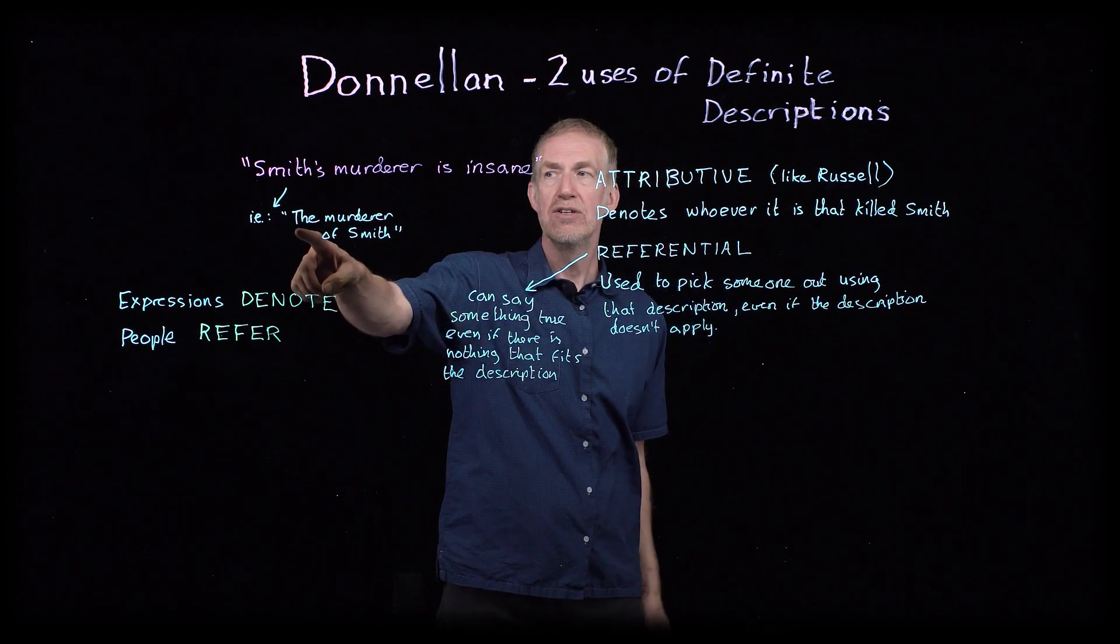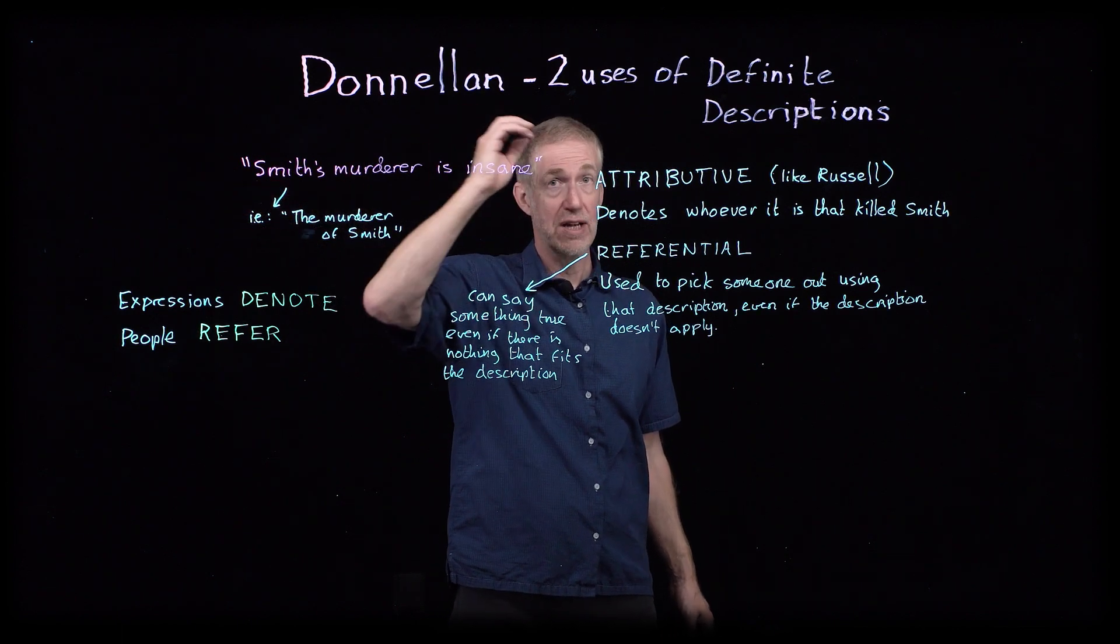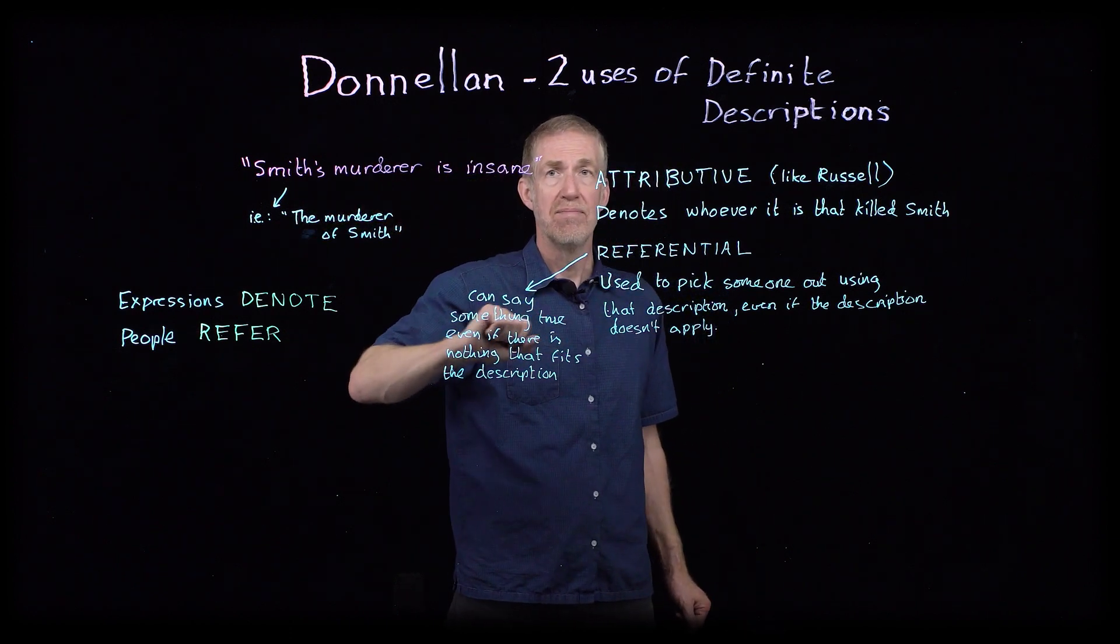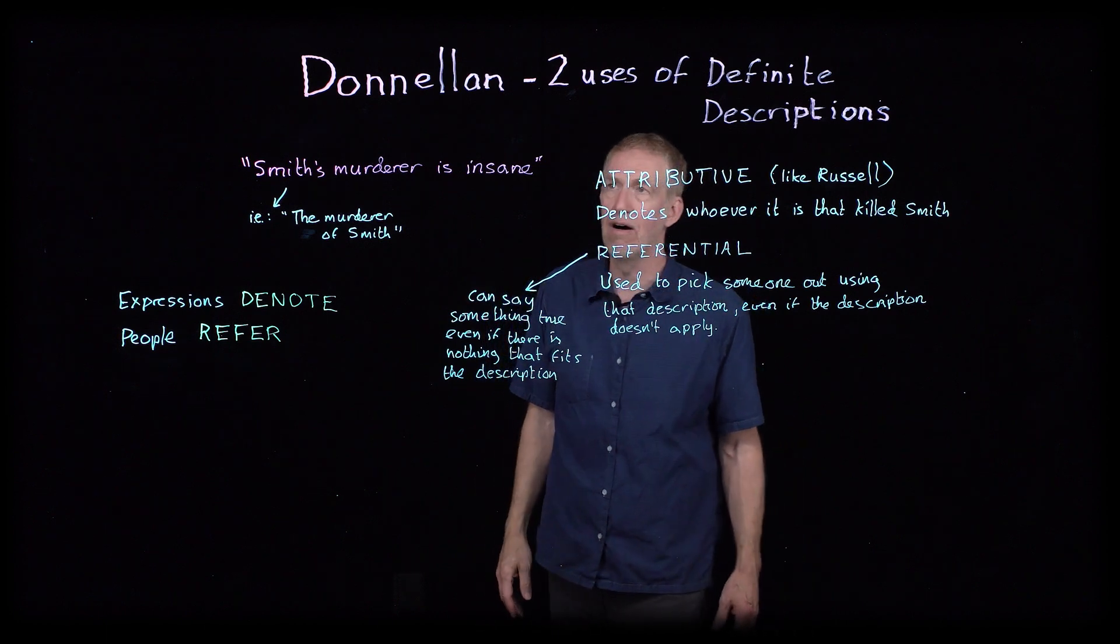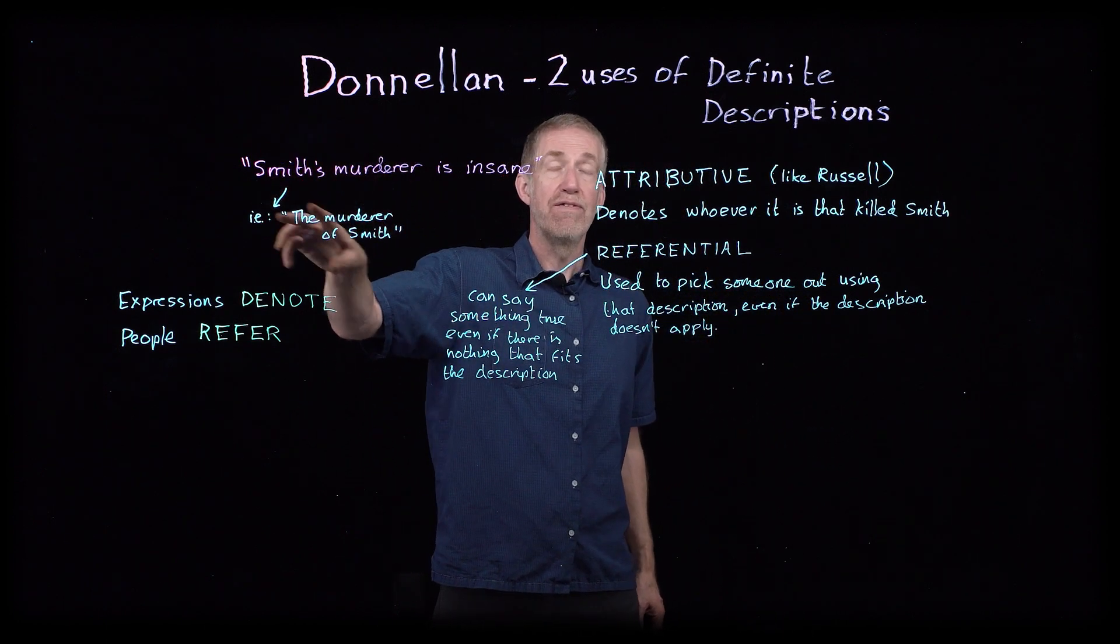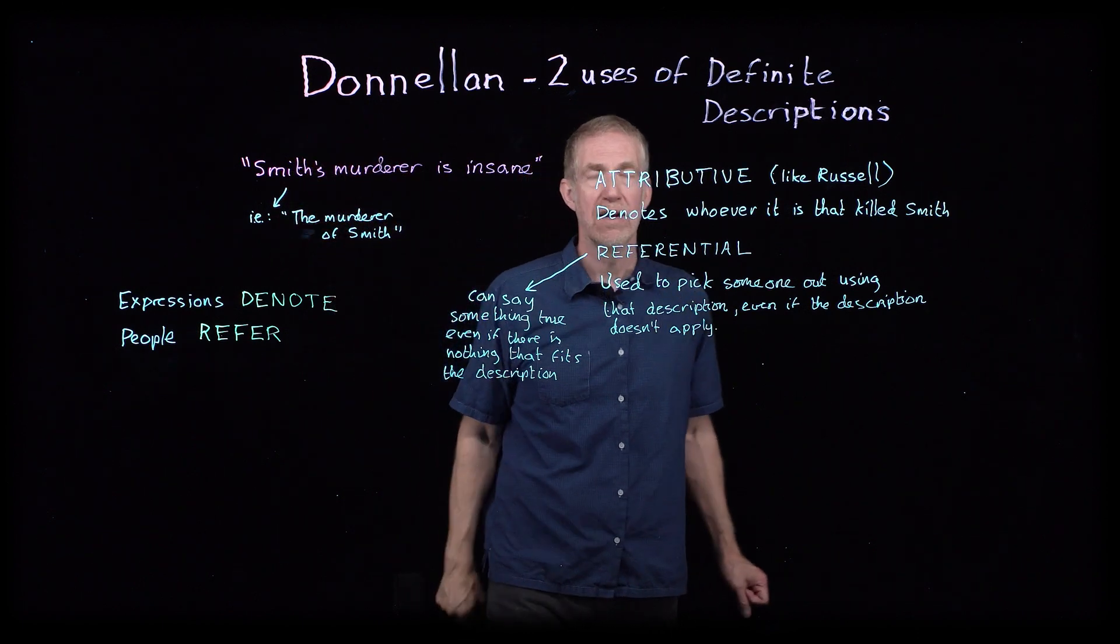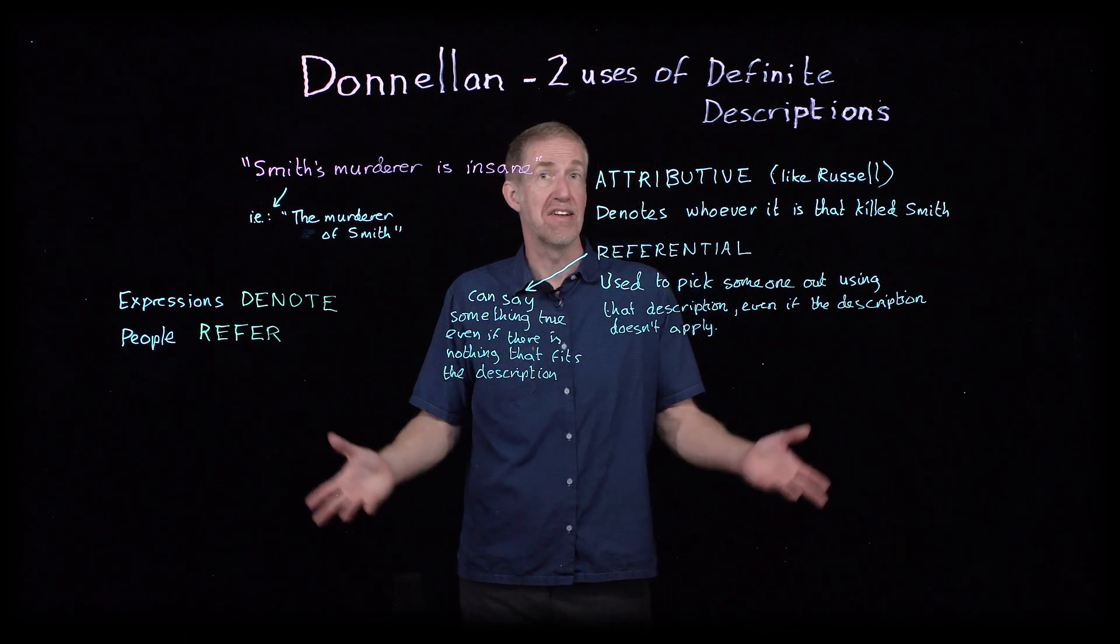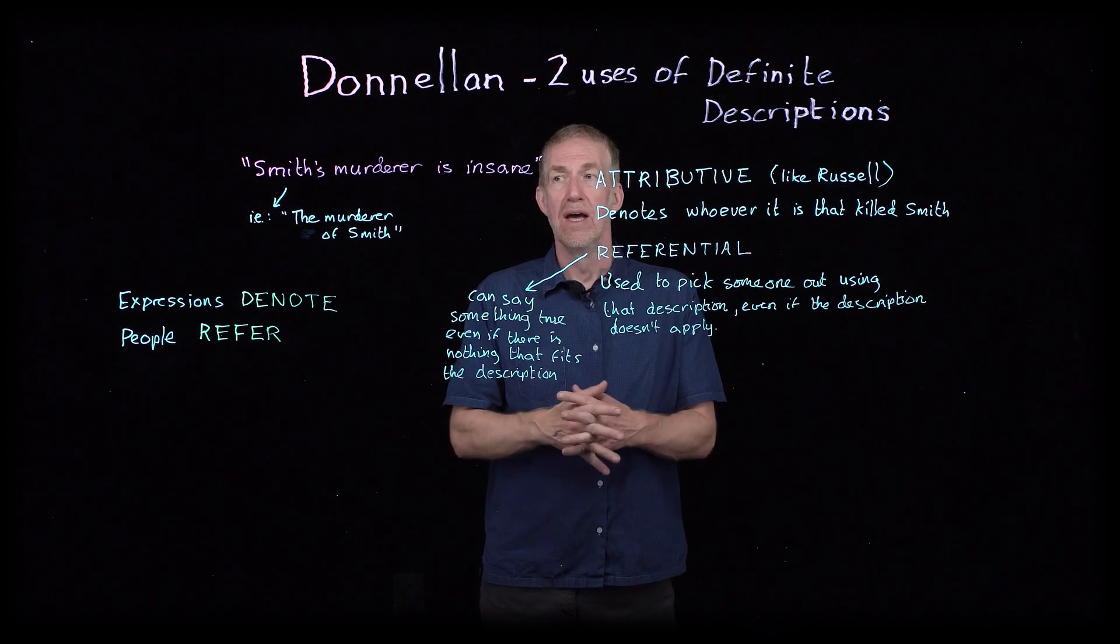Remember, definite descriptions are descriptions beginning with the word 'the'. Now, slightly confusingly, the main example that Donnellan gives is 'Smith's murderer' is a definite description. But of course, you could rewrite that as 'the murderer of Smith'. The important thing about definite descriptions is they refer to unique entities. So whomever Smith's murderer is, there's only one of them. It is assumed, unless it's like Murder on the Orient Express, if you know that story.